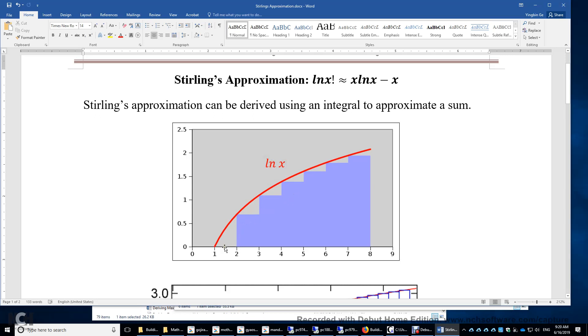So this blue bar has a height of 0 because ln 1 is 0. ln 2 is 0.7, so we have 0.7 times 1 here. And then ln 3 is 1.1, you have 1.1 times 1 as the area of this blue bar. And then this one is ln 4 times 1, ln 5, ln 6, ln 7. So really, the sum of ln 1, ln 2, all the way to ln 7 can be approximated as the integral of ln x from 1 to 8.